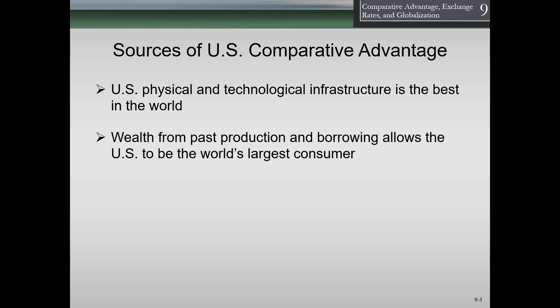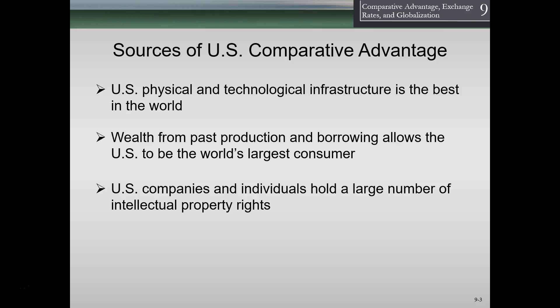Wealth from past production and borrowing allows the U.S. to be the world's largest consumer, giving us a lot of control. Anyone who wants to produce something has to consider the U.S. market, which influences the types of production and trade that happen. U.S. companies and individuals also hold a large number of intellectual property rights. We tend to be good at services, education, computers, software, pharmaceutical research and development, and patenting movies — these are areas where we have strong intellectual property.